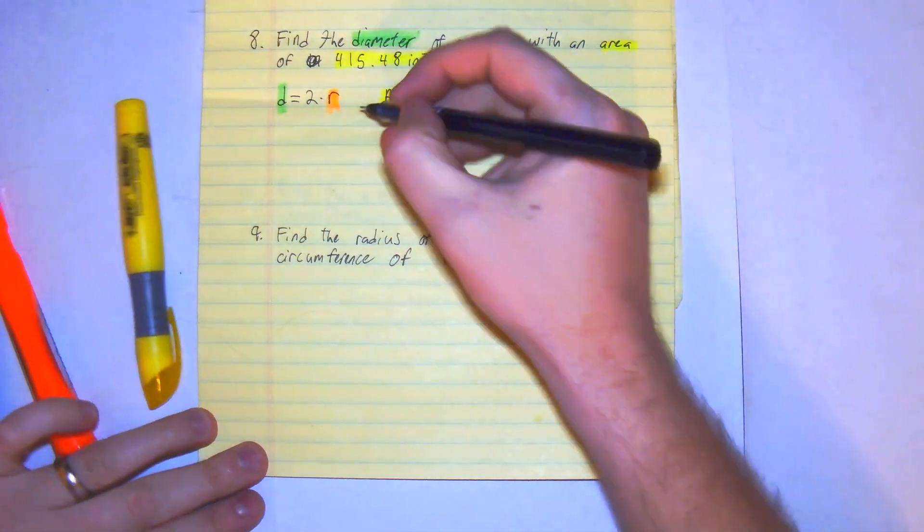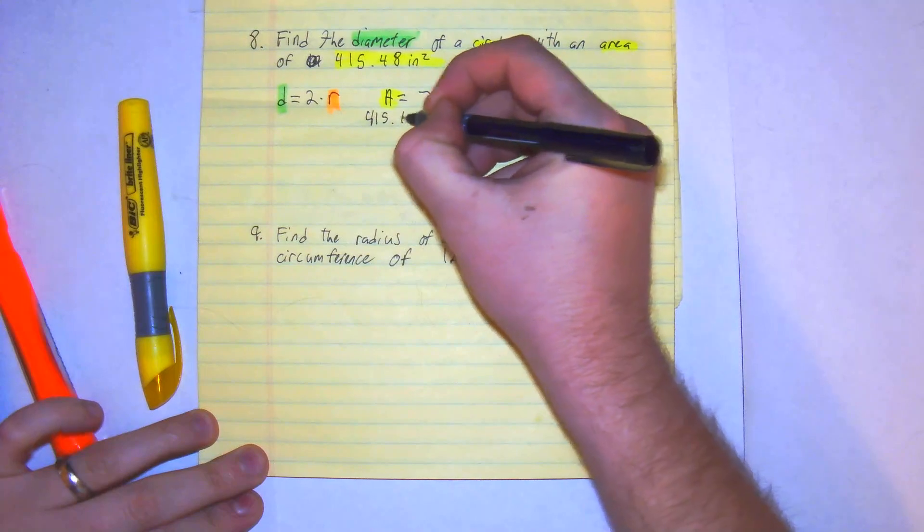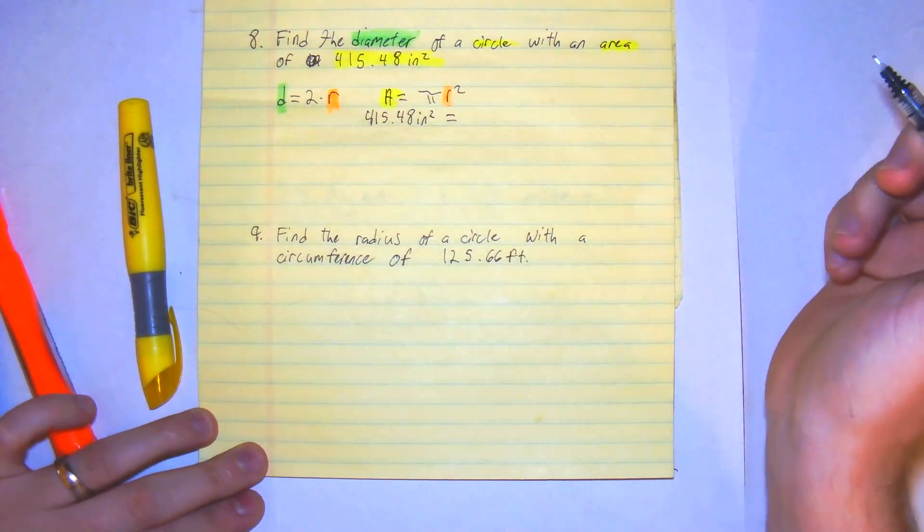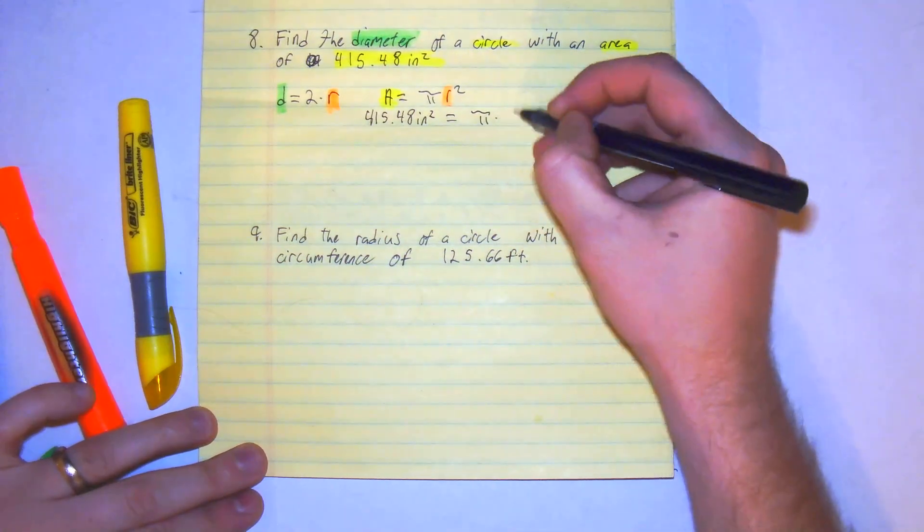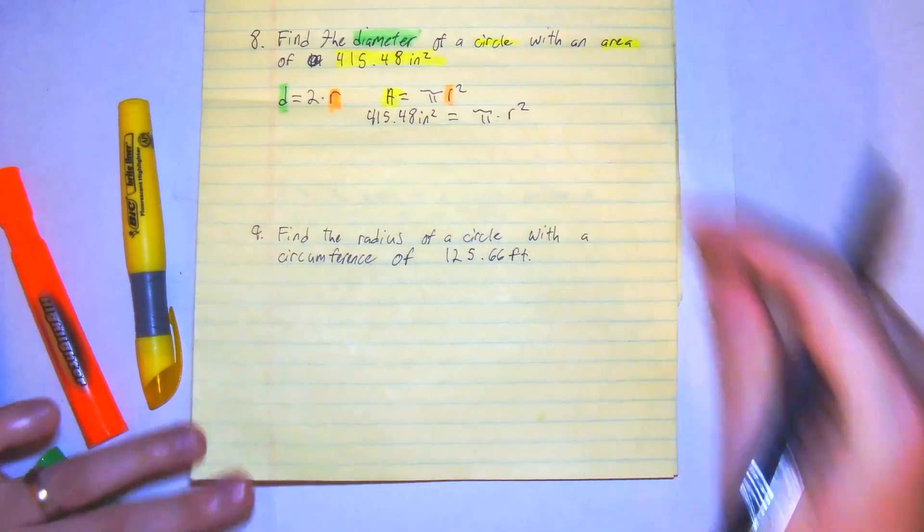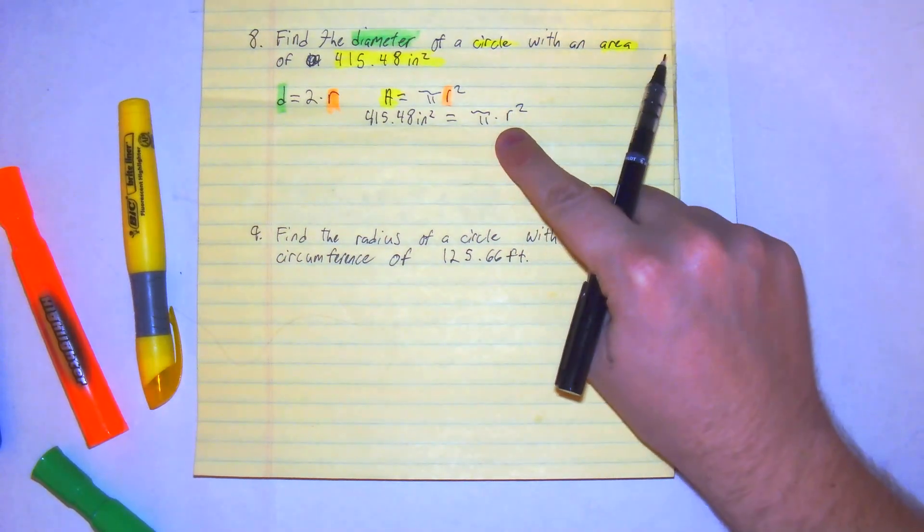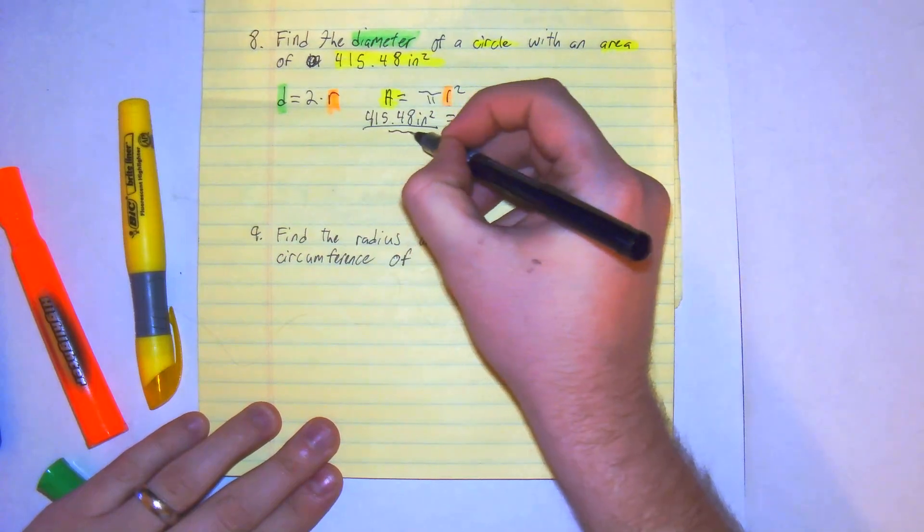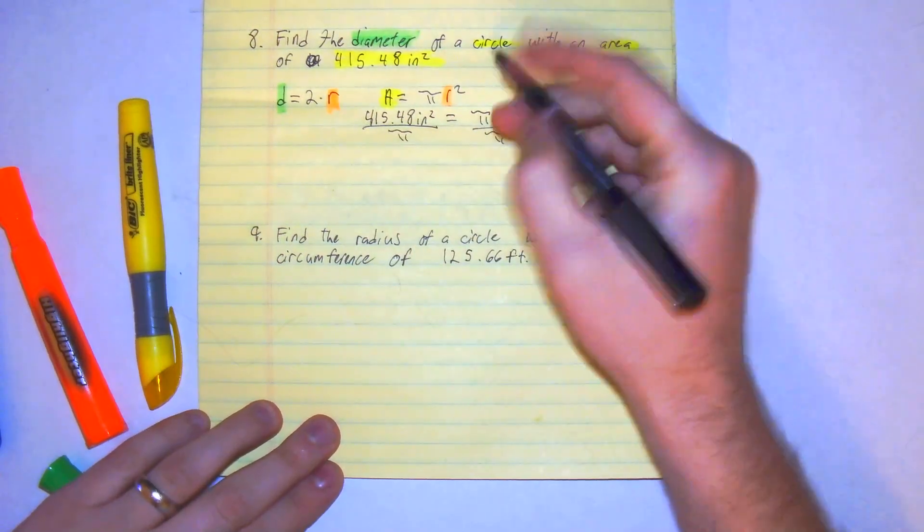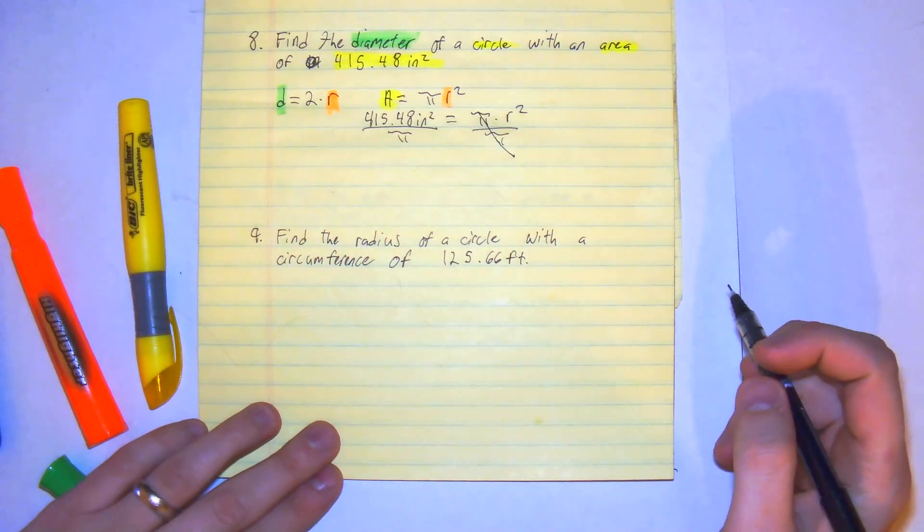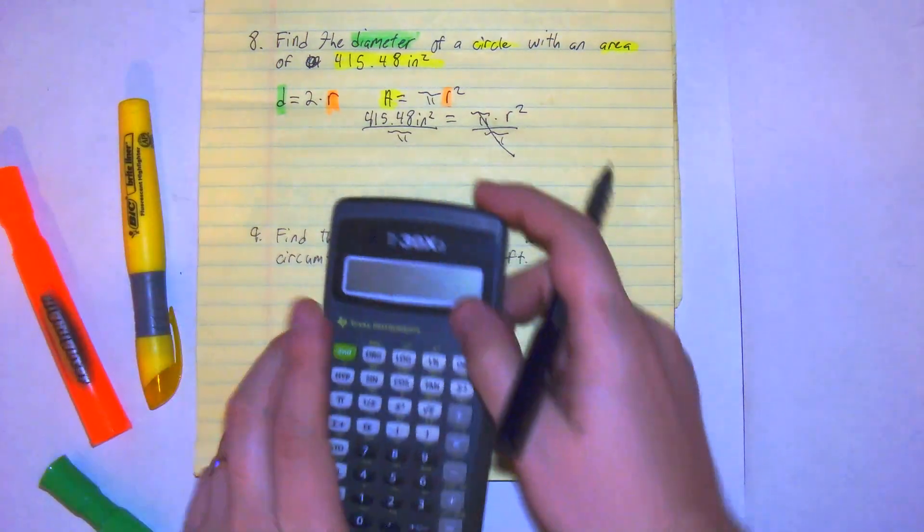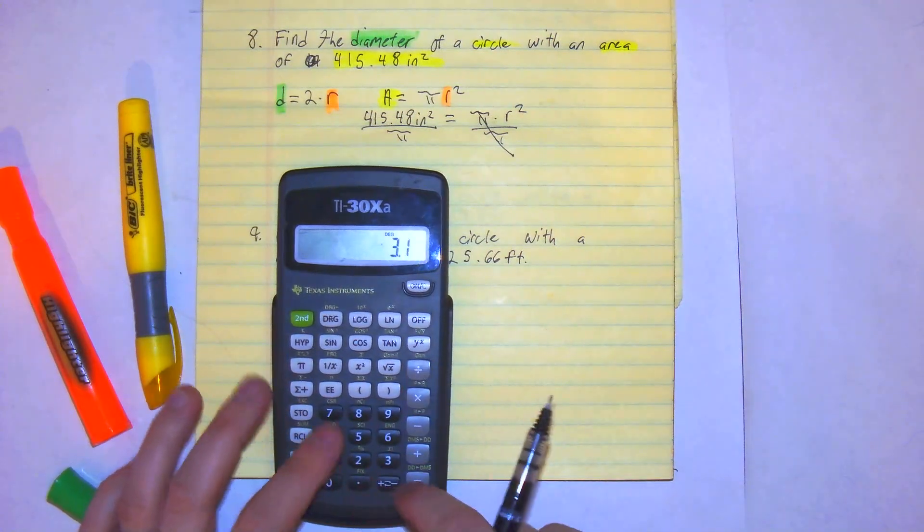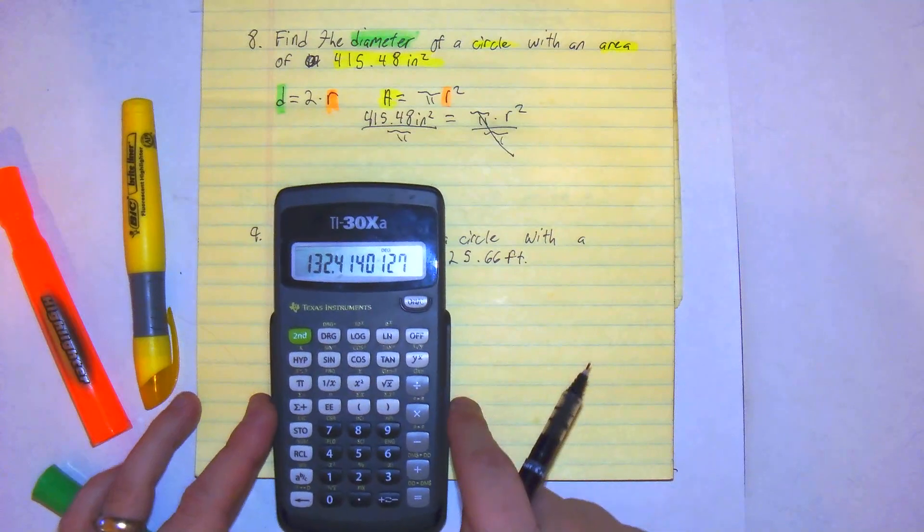So we're going to input what we're given. 415.48 inches squared equals π times r². From here, divide both sides by π. We're going to cancel that. So right here, we have 415.48 divided by 3.14, we get about 132.4.